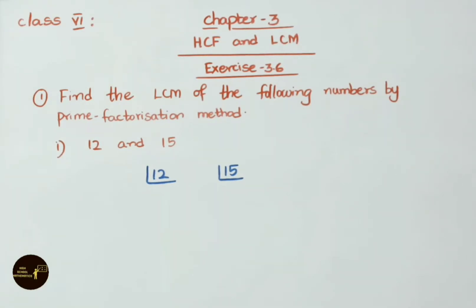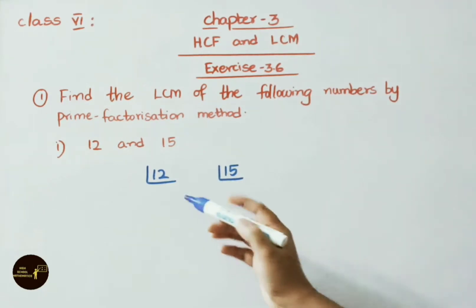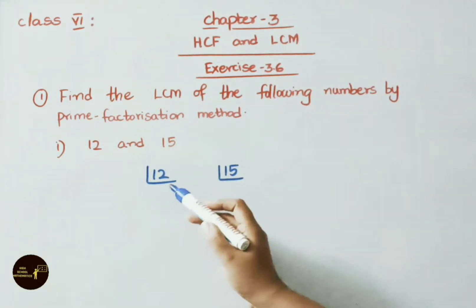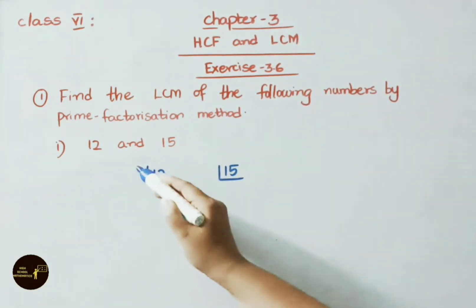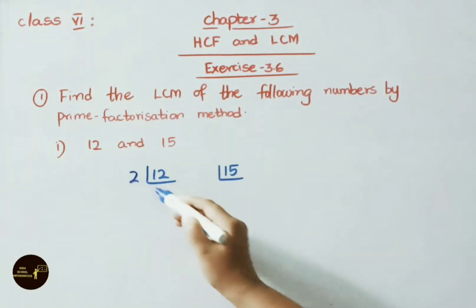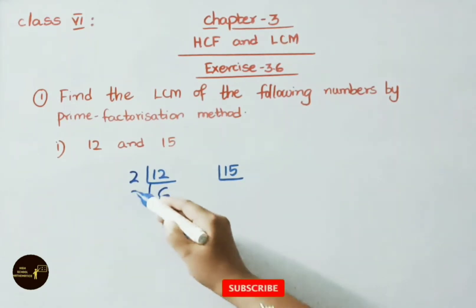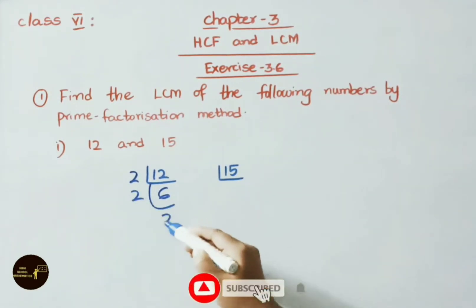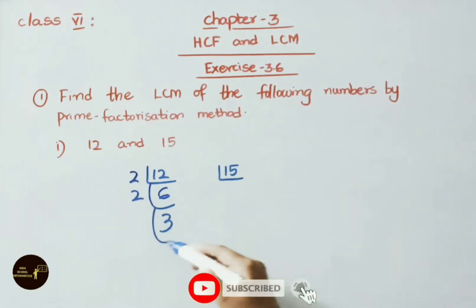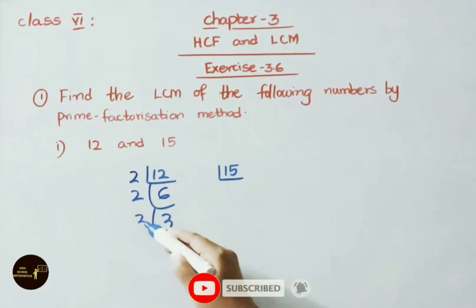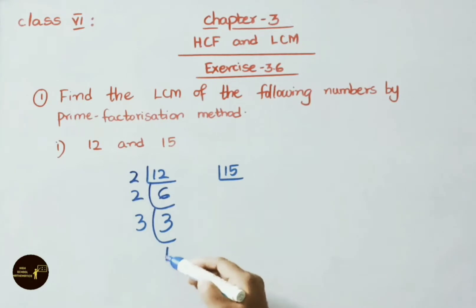See the first sum. We have to find LCM for 12 and 15. For 12: 2 times 6 is 12, then 2 times 3 is 6, then 3 times 1 is 3.